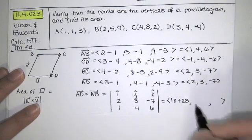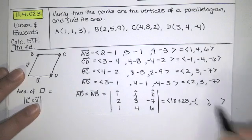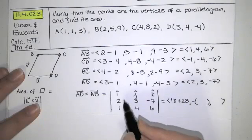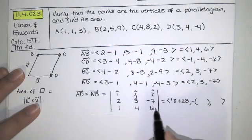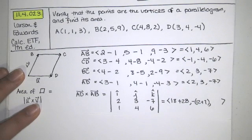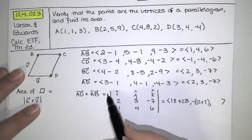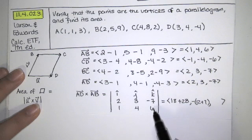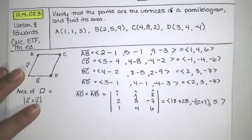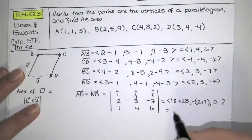Times I hat plus negative 1 times whatever we get when we cross out this row and this column. And then we have another determinant. So we're going to have 12 minus a negative 7, so that's 12 plus 7 there. And then for the last one, cross out this row and this column, we're going to have 8 minus 3, which is 5 times k hat. So that ends up being 46 and negative 19 and 5.